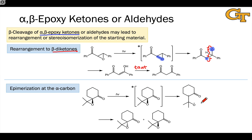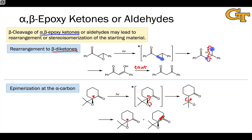In cases where the 1,3-diradical can reclose with some efficiency, we also observe epimerization at the alpha carbon if it's stereogenic. For example, starting with a compound containing a stereogenic alpha carbon, photoexcitation causes beta cleavage and produces the familiar 1,3-diradical with C-dot and O-dot. This radical center is now planar, and bond rotation around the carbon-carbon bond can move the oxygen from above to below the plane. Radical recombination then places the oxygen on the bottom face, resulting in a change in configuration at the stereocenter, ultimately giving a mixture of two enantiomers. This is good evidence that beta cleavage is occurring, and a big driver is relief of ring strain in the epoxide ring.